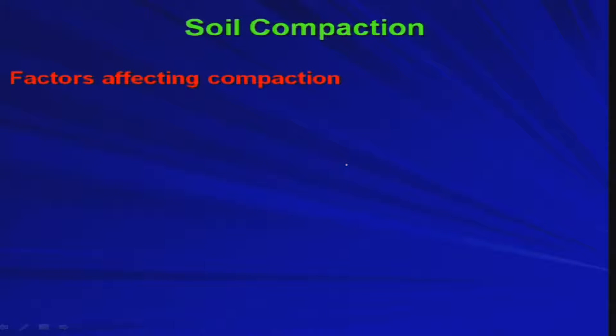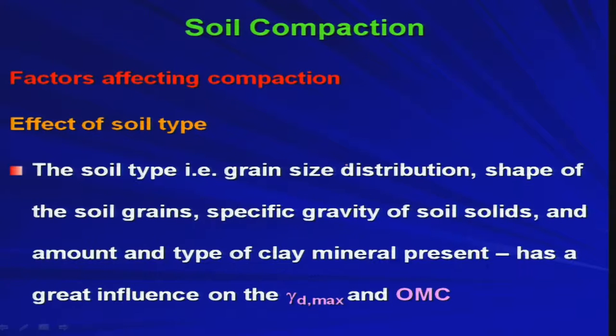Now, the factors affecting compaction: the effect of soil type includes grain size distribution, shape of the soil grains, specific gravity of soil solids, and amount and type of clay mineral present — all of which have great influence on gamma D max and OMC. Grain size distribution determines whether soil is well graded or poorly graded; poorly graded soil gives less compaction than a well graded sample. Similarly, angular grain shapes give more compaction than rounded grain shapes.